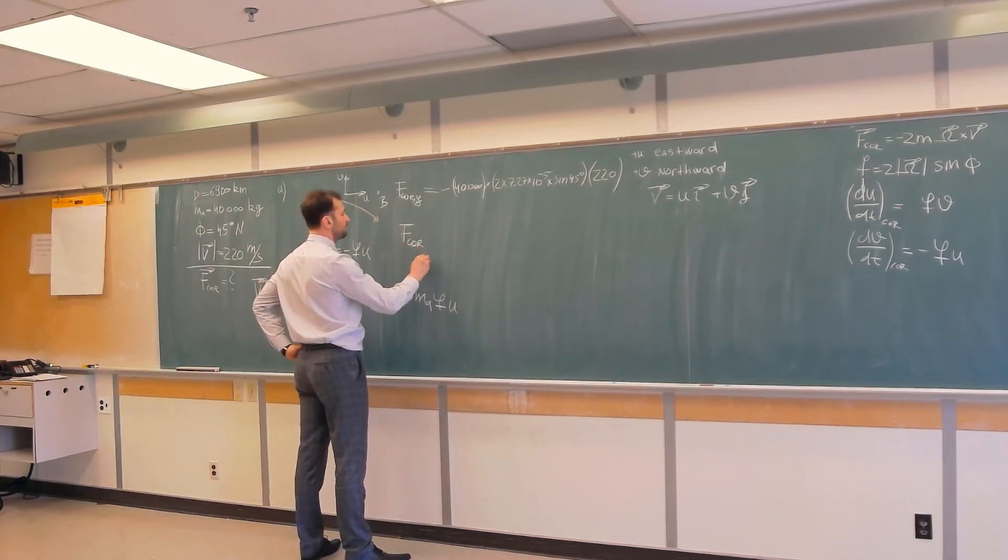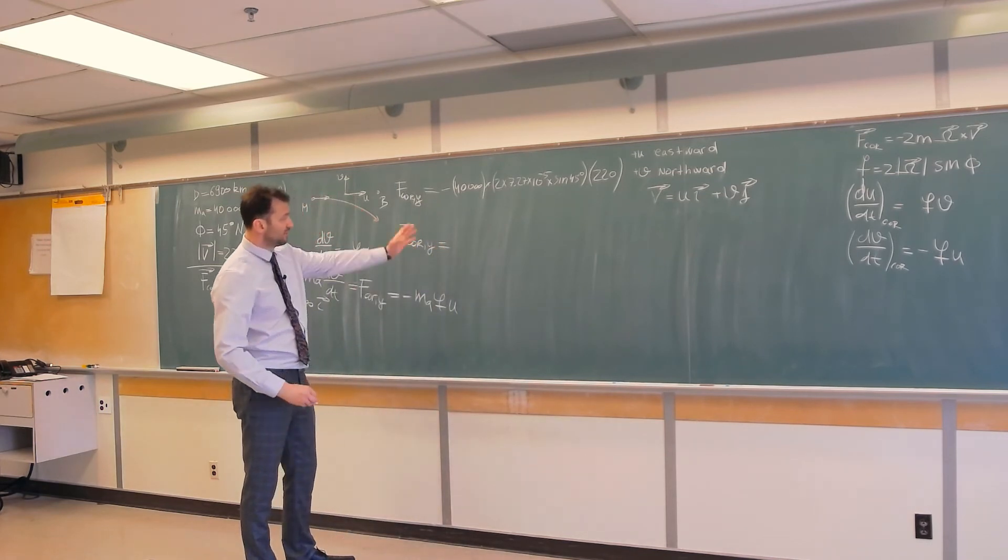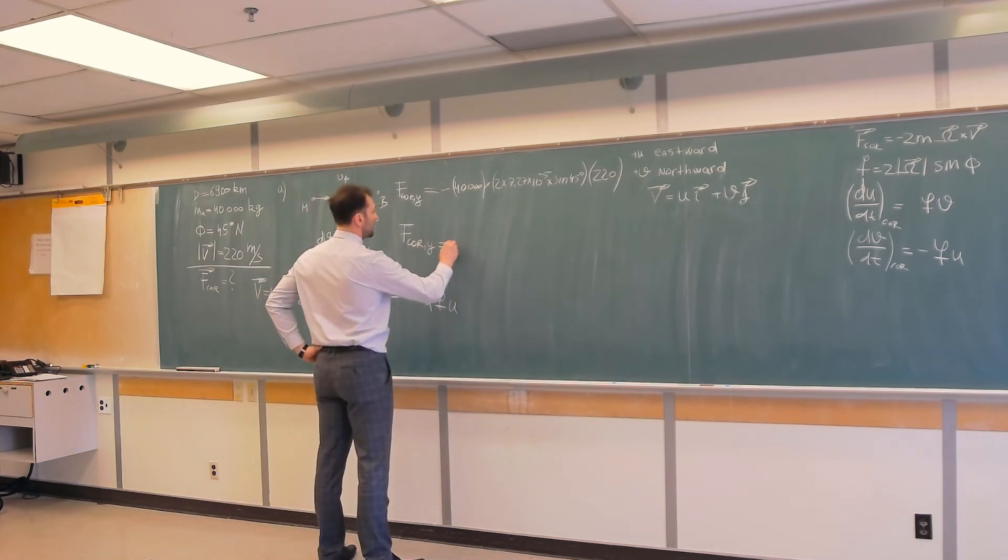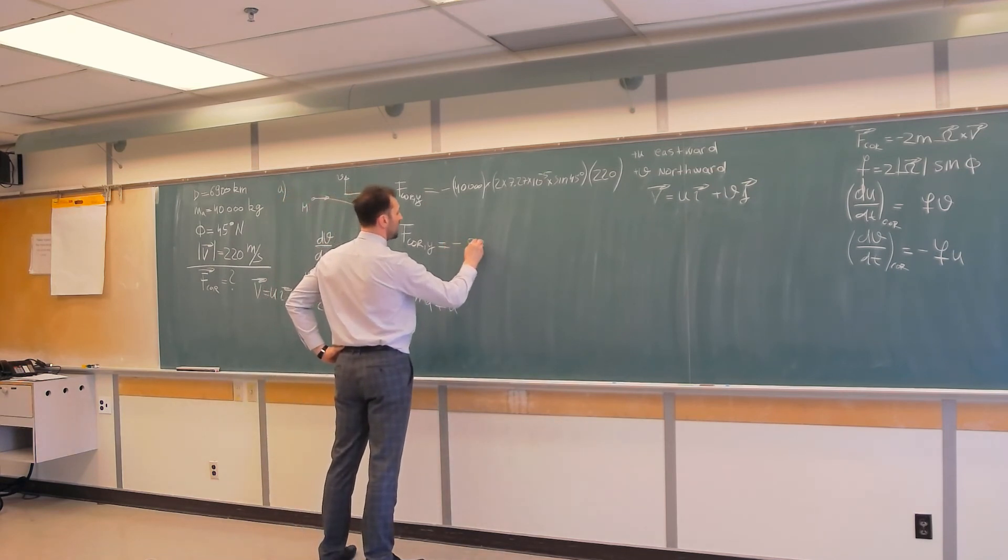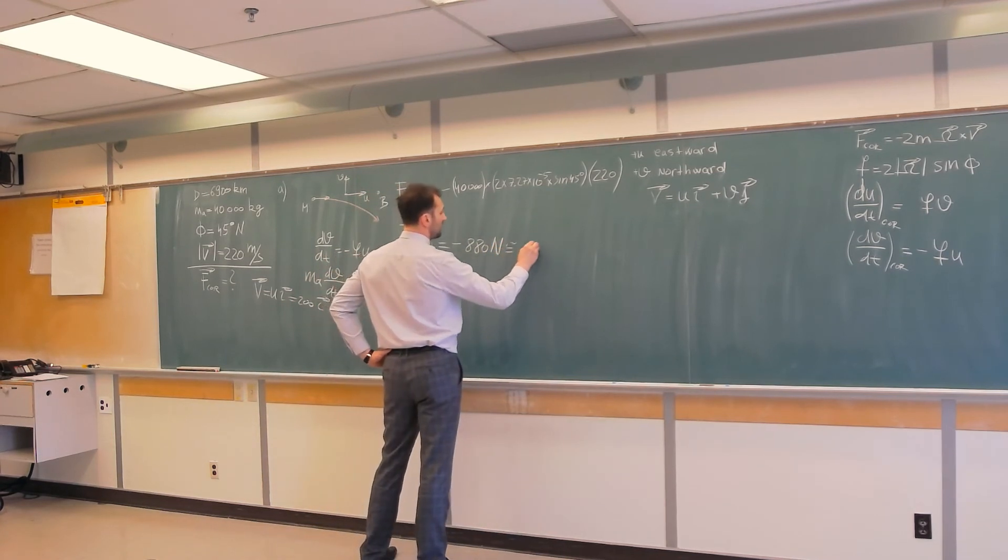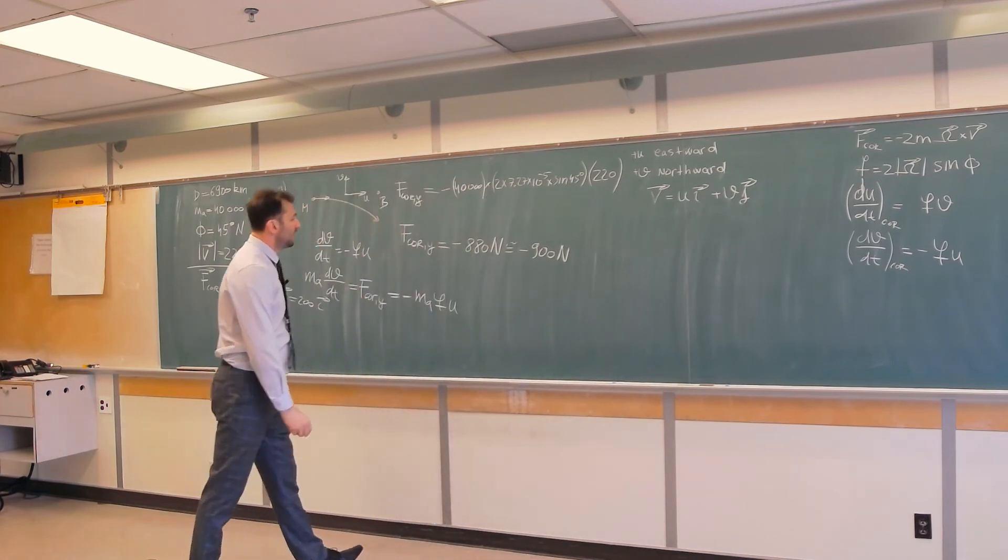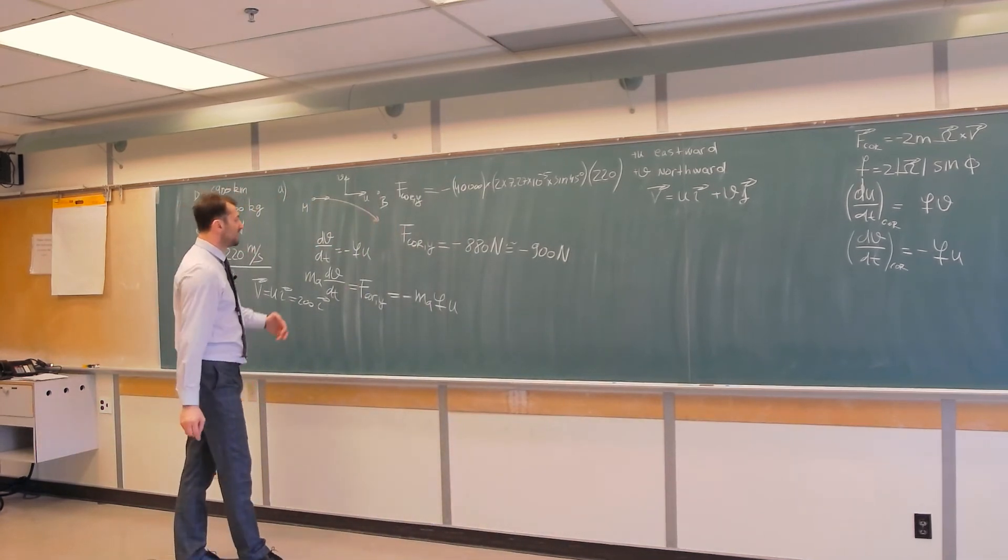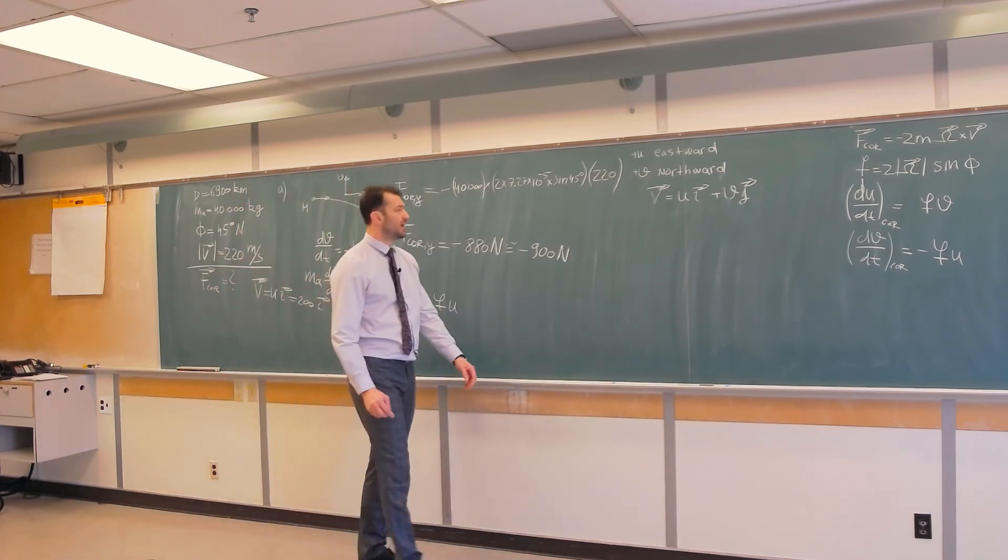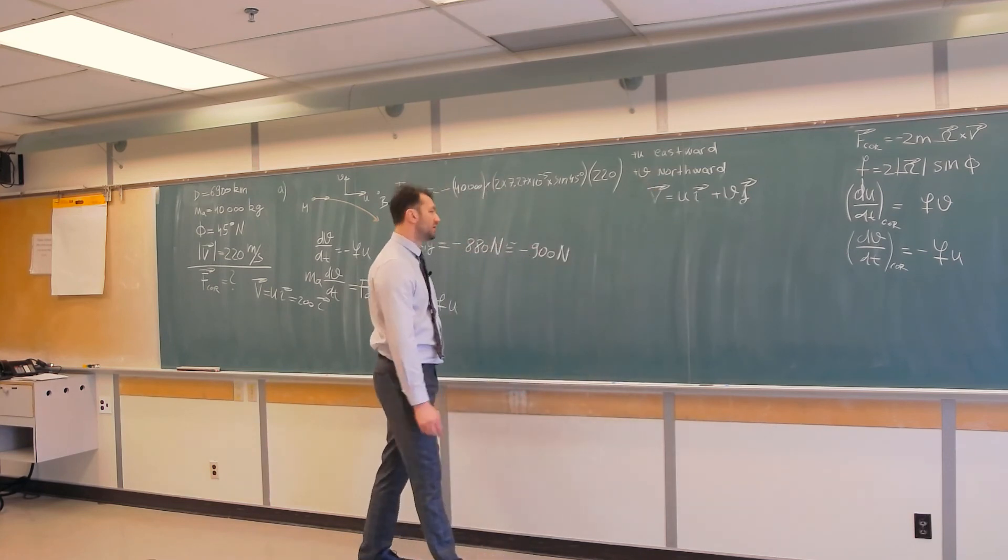At any rate, f Coriolis in the y direction is equal, when you calculate all these numbers, I believe you get negative 880 newtons, which is approximately negative 900 newtons. And we got a result that is negative, which makes sense. Force is acting towards the south, and south is opposite of north, and north is our positive direction.